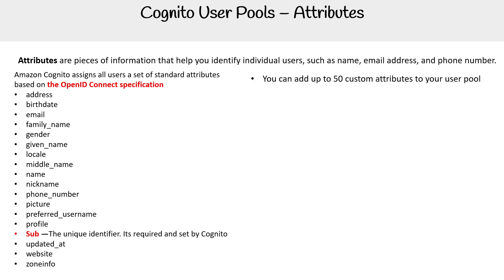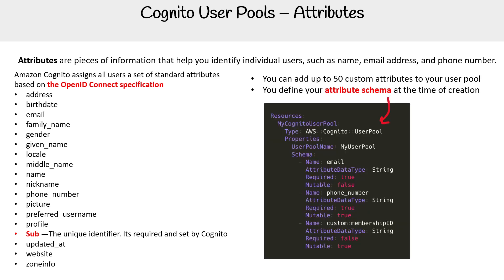You can add up to 50 custom attributes to your user pool, and you define your attribute schema at the time of creation. You don't want to put all of your data in here — this is just data that doesn't change often that will save you a trip to your database. For the most part, you want to store as little as you can here and not rely on this as your main place for data.